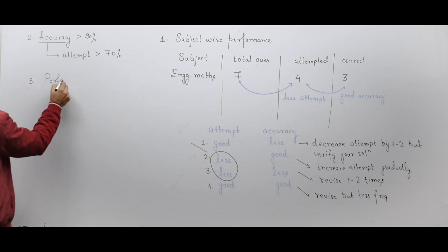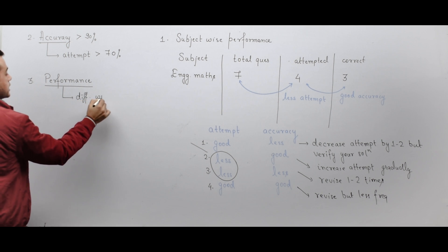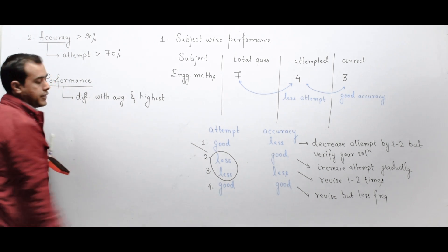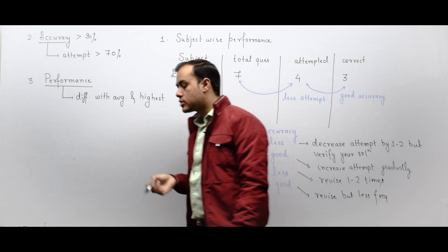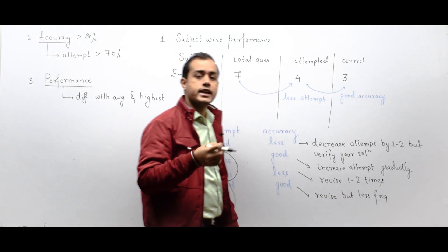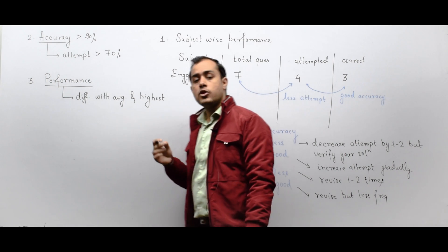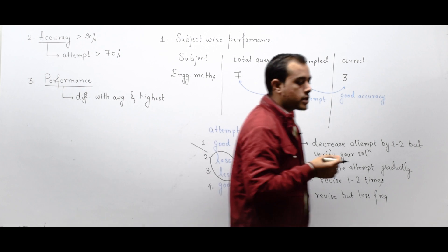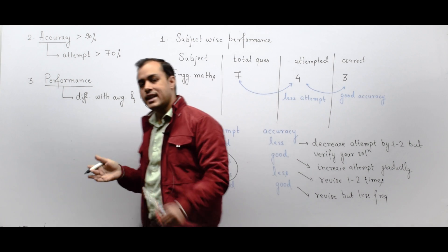Third, measure performance by checking the difference of your marks with the average performance and the highest score. Some tests may be very difficult, so your score will be less — but that will be the case for every aspirant. Check your performance relative to the average score and the topper score so you know you are gradually building toward top performance. If your distance from the average and the topper is reducing, your performance is improving.